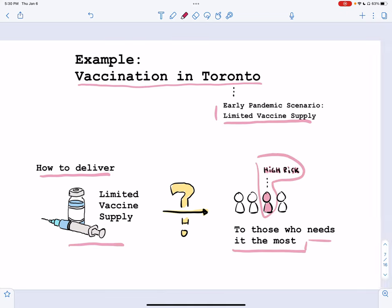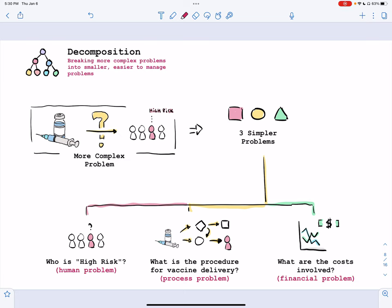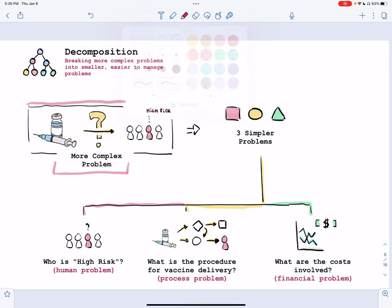And that's the high-risk group. So with decomposition, we'll break a more complex problem of how to deliver vaccines to those who need it into three simpler, easier-to-manage problems.